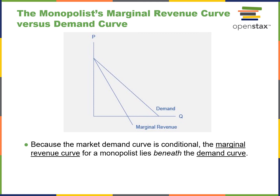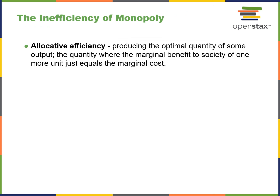A monopolist's marginal revenue curve lies beneath the demand curve because the market demand curve is downward sloping. Regarding allocative efficiency, monopolies tend to be inefficient — producing the optimal quantity means producing where the marginal benefit to society of one unit just equals the marginal cost. Monopolies very often tend not to do that. End of Chapter 9.